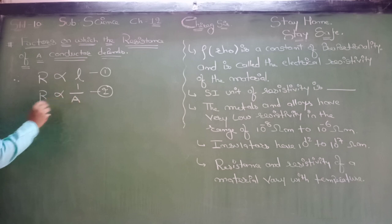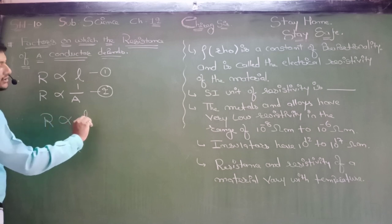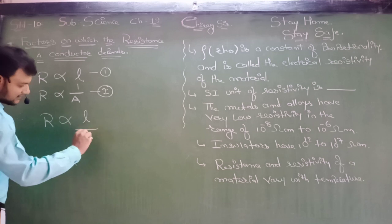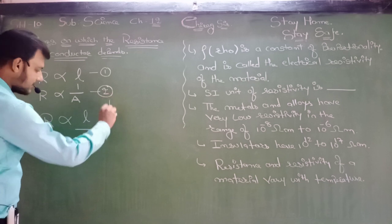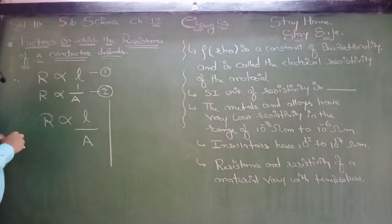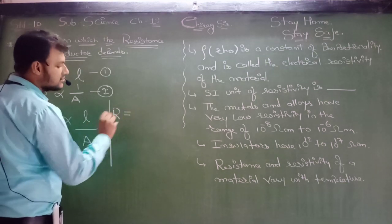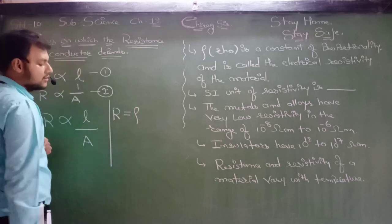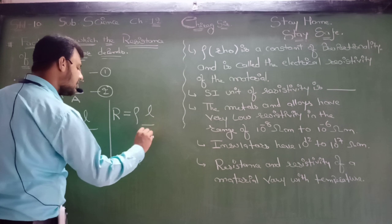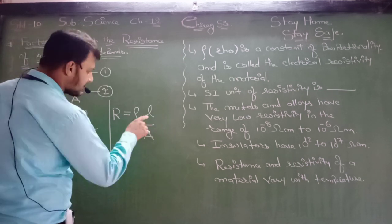Dear students, if I want to write both equations as a single equation, I can write it this way: R is proportional to L, and R is inversely proportional to A. If I want to remove the proportional sign, then I can write: R equals a constant times L divided by A.